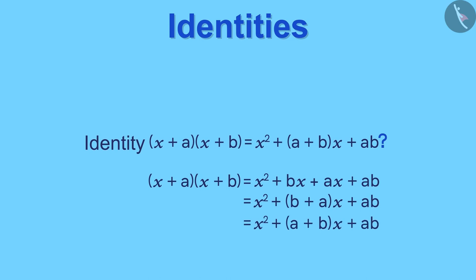We can take that x as common and write it like this. And now, we can see that this is the same as the right hand side of this identity. Therefore, this given expression is an identity.